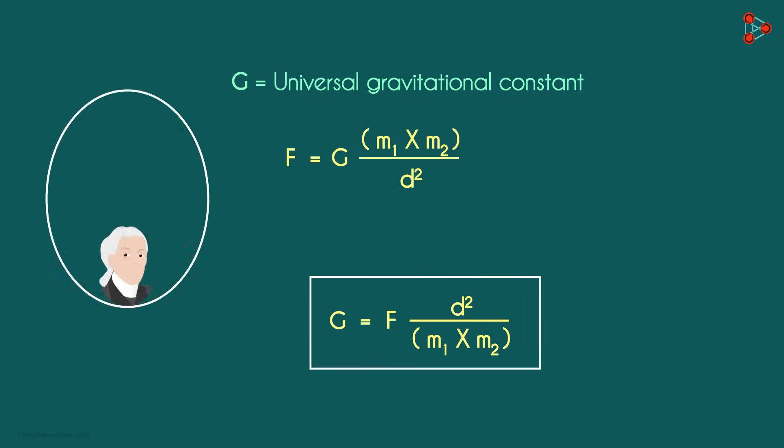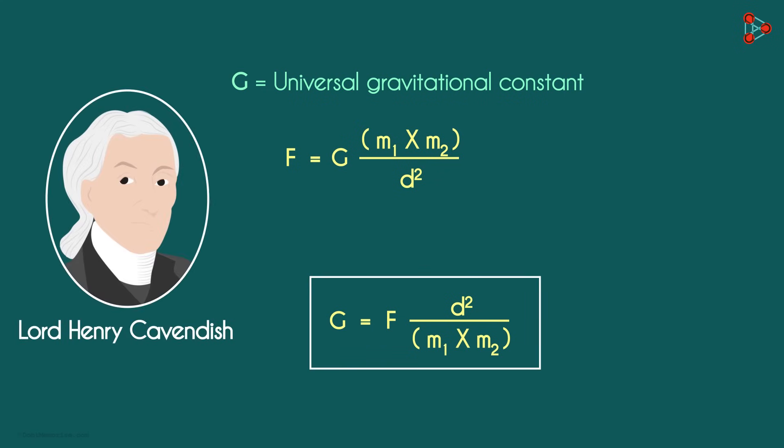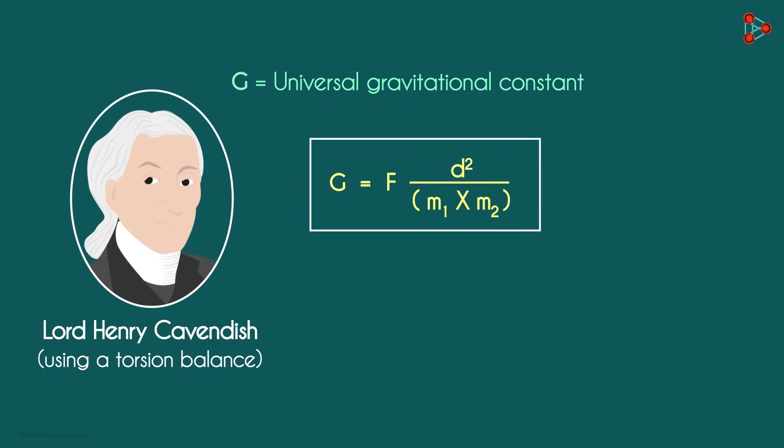The value of G was found out by Lord Henry Cavendish using a torsion balance. The universally accepted value of G is 6.673 times 10 raised to negative 11.